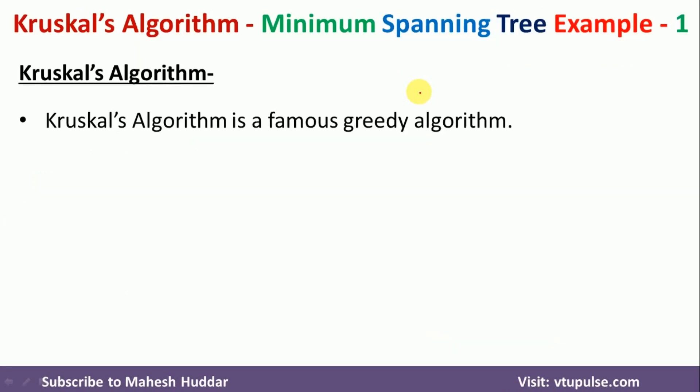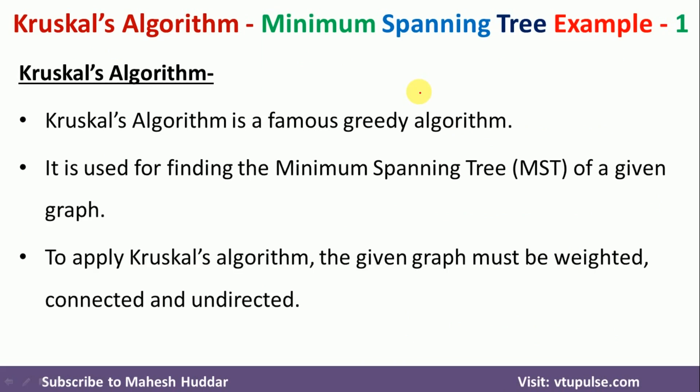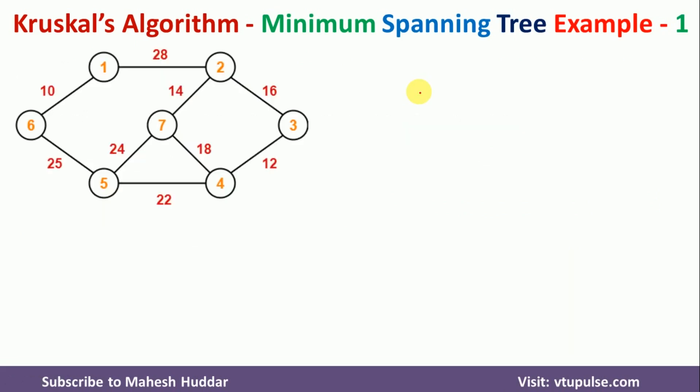Kruskal algorithm is a famous greedy algorithm which is used to find the minimum spanning tree. The graph must be weighted, connected and undirected. For this example, I am going to consider this graph. The graph has seven nodes with different edges. The graph is connected, undirected and it is a weighted graph.